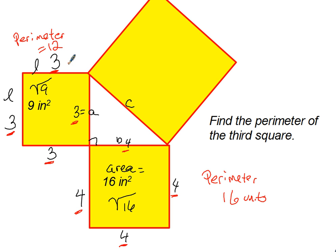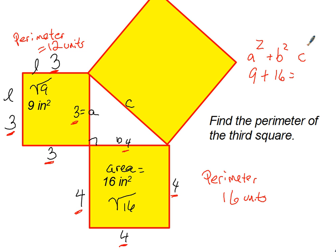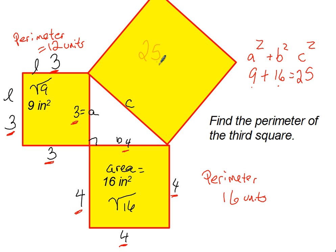Now to build the Pythagorean theorem from what we have so far: A squared, which in this case is 9, plus B squared, which in this case is 16, is going to be equal to C squared. If we add 9 plus 16 we get 25. So that tells us that the area of this third square is 25 inches squared.